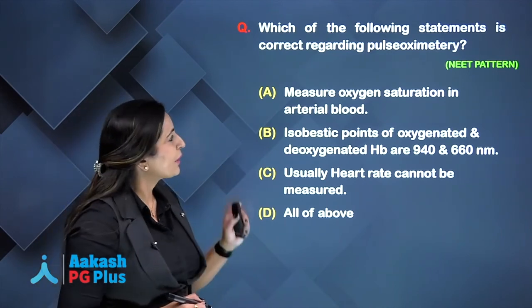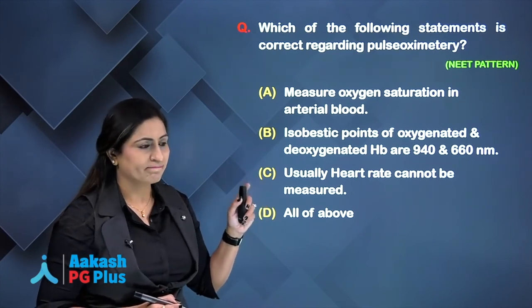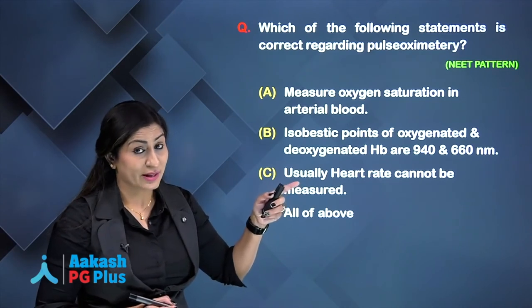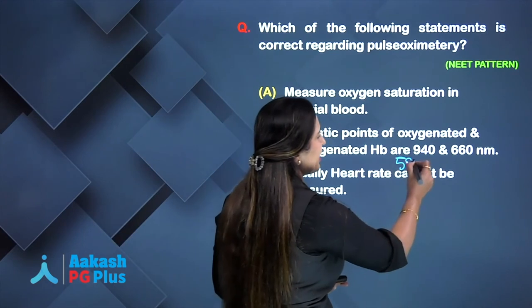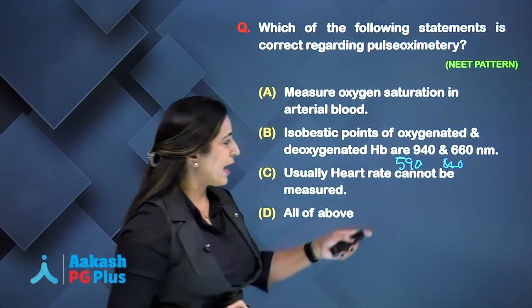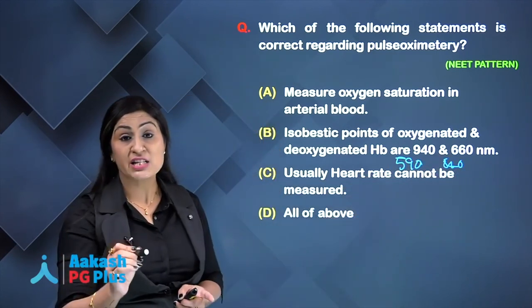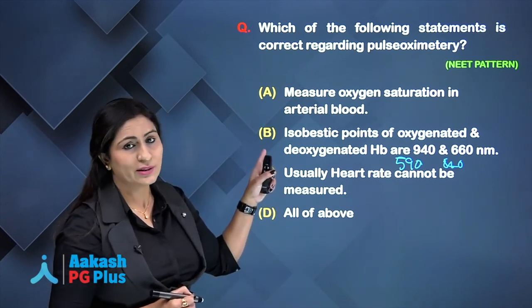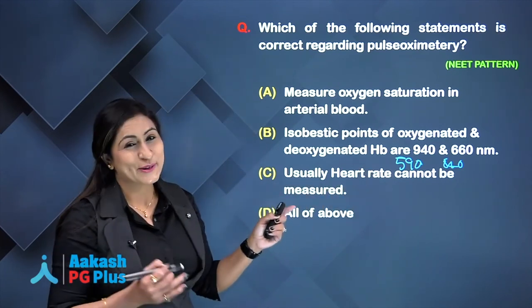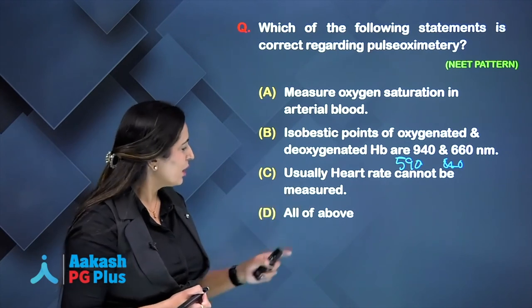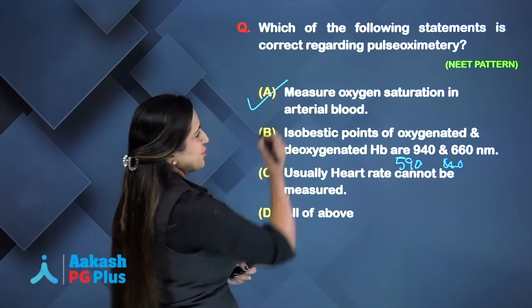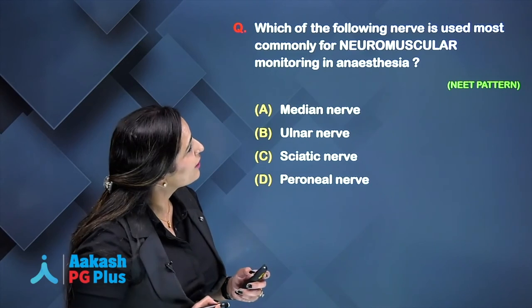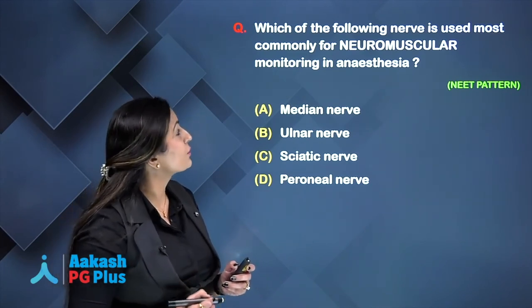Reviewing the question: 'It measures oxygen saturation in arterial blood' — correct. 'Isobestic points are 940 and 660 nanometers' — incorrect; those are the probe wavelengths, not isobestic points, which are 590 and 850 nanometers. 'Heart rate cannot be measured' — also wrong, since pulse oximeters measure pulse rate. Therefore, the answer is option A: it measures oxygen saturation in arterial blood.